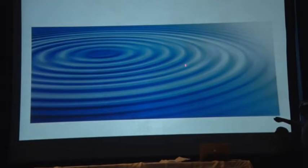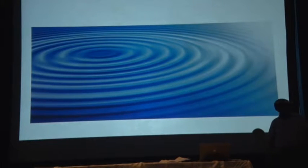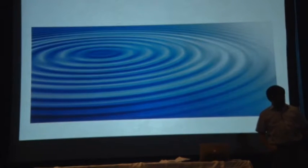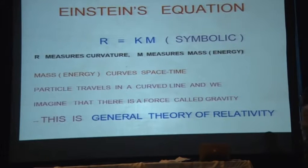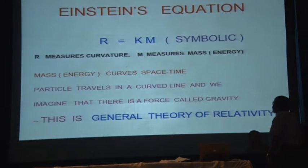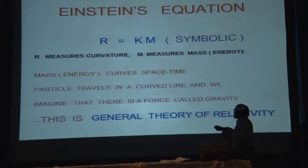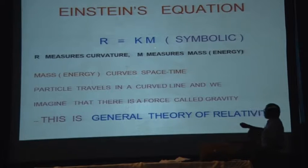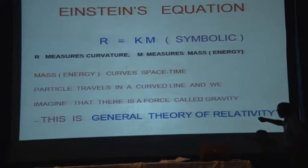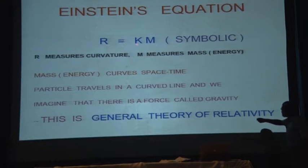You can see the fluctuation in space — the space where you are sitting now in this auditorium. Einstein wrote a famous equation where he wrote curvature on one side and mass on the other side. The actual equation looks more complicated, but this is a symbolic way of writing it.